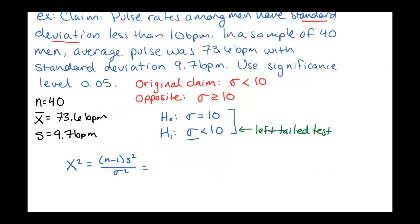So our test statistic here is fairly simple to compute. We've got n minus 1, so in this case that would be 39, times the sample standard deviation 9.7 squared, and then divided by our population standard deviation. And again, this is the population standard deviation that we're assuming for the null hypothesis. This would be a 10 squared.